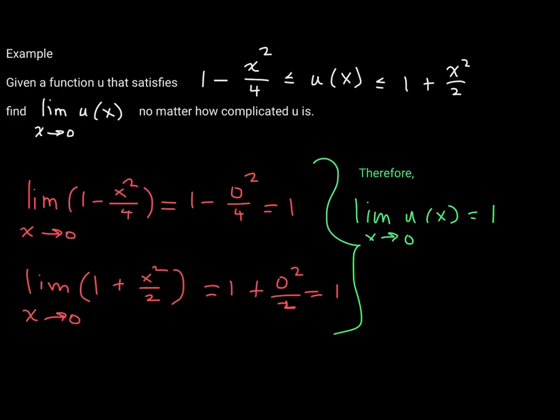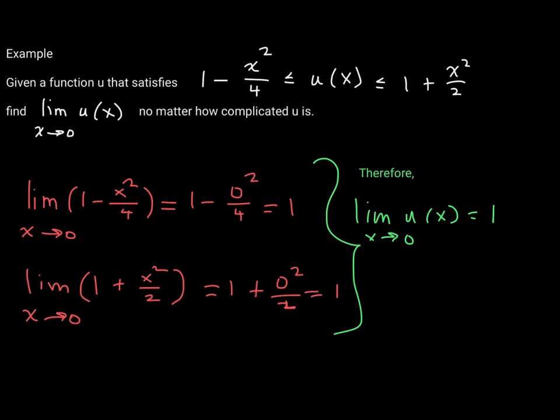The sandwich theorem helps us establish these important limits: the limit of sin(θ) as θ approaches 0 is 0, and the limit of cos(θ) as θ approaches 0 is 1. You'll want to remember these — they will be very important as we proceed through our studies.